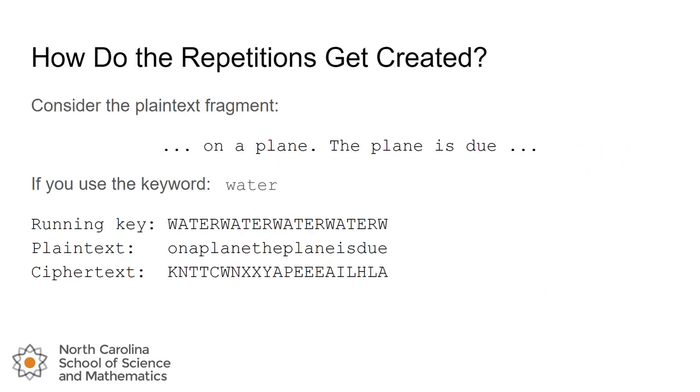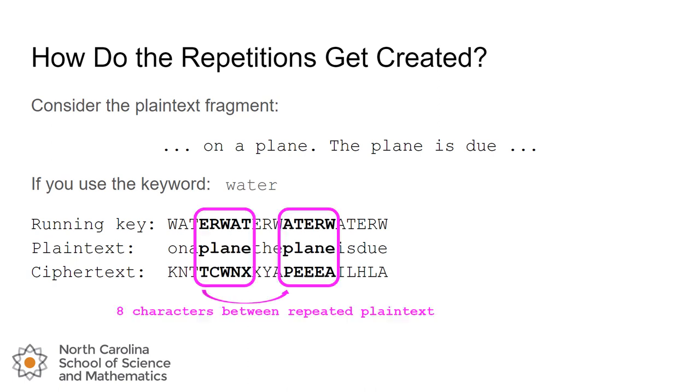Let's take a look at maybe how these repetitions in our Vigenère ciphertext are generated. To do that we're going to use this plaintext phrase. This is a little fragment here of a sentence that ends on a plane and then the next fragment starts with the plane is due. And we're going to try and encrypt this using Vigenère with a couple of different keywords. We'll start with the five-letter keyword water and when we encrypt our plaintext into ciphertext we'll see that the plaintext repetitions start eight characters apart, but we don't get a repetition in the ciphertext. The first time is TCWNX and the second time is PEEA. So no repetition for this one.